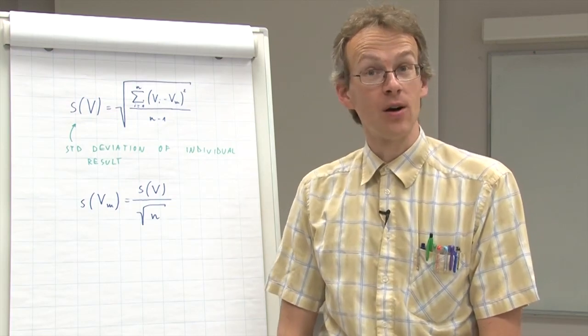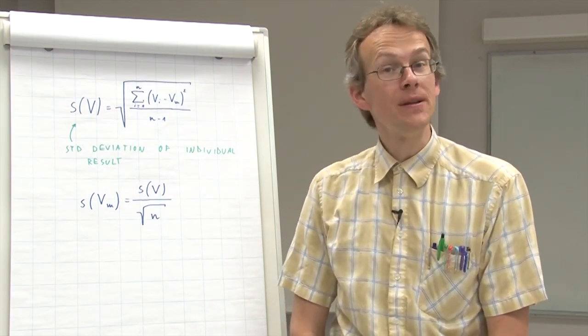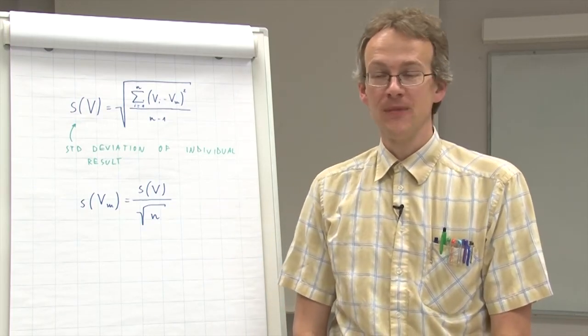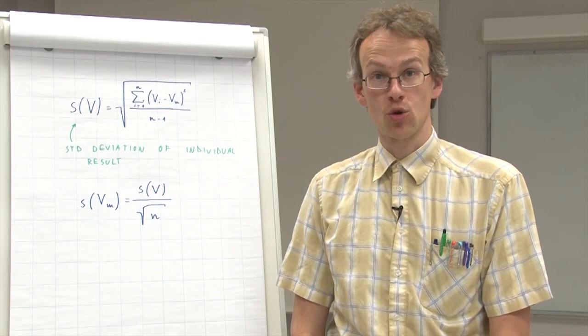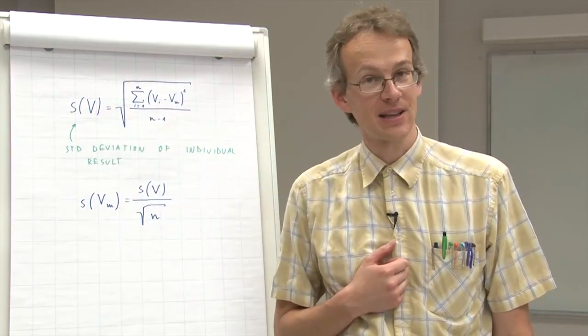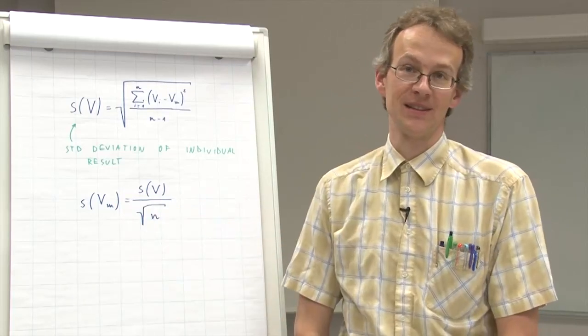It turns out now that we have two different standard deviations for the same series of measurements. And it is very reasonable to ask, when do we use the standard deviation of the individual result? And when do we use the standard deviation of the mean?